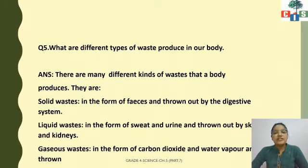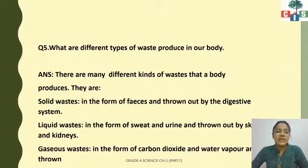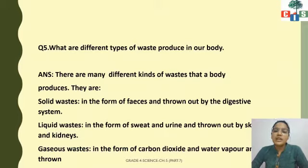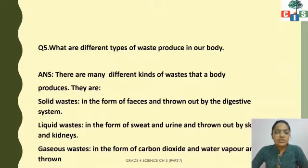There are different types of waste produced inside our body. Number one is solid waste, in the form of feces, thrown out by the digestive system. Number two is liquid waste, in the form of sweat and urine, thrown out by the skin and kidneys. Sweat is produced inside our body and removed by the skin. Number three is gaseous waste, in the form of carbon dioxide and water vapor, thrown out by the respiratory system.